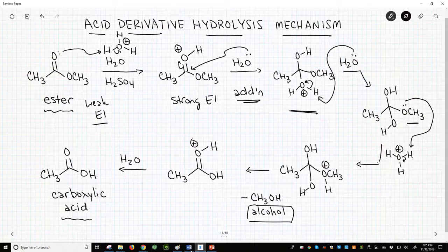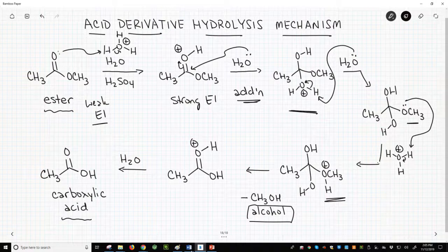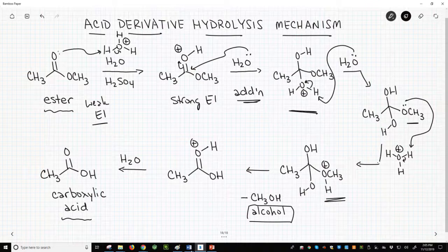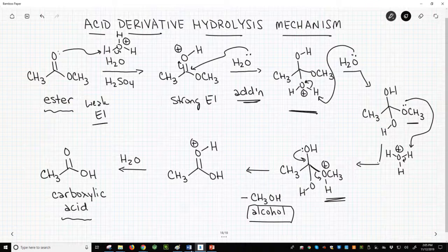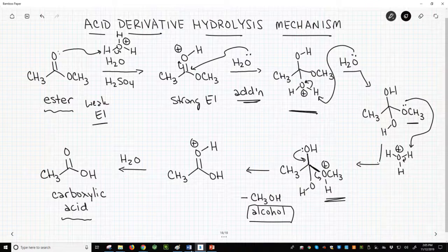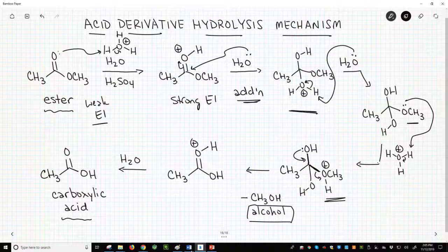Okay, now the OCH3 is part of a better leaving group. It will now leave, but it doesn't just leave. It sort of gets pushed out. It gets pushed out by this neighboring oxygen. So as we break the CO bond, we form a different new CO-pi bond. Breaking bonds requires additional energy. We'll offset that lost energy by making a new bond at the same time. That was an important step because we lost our alcohol, which is one of our two products.